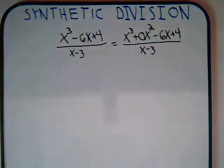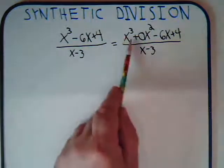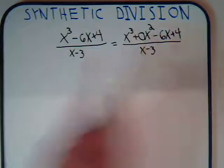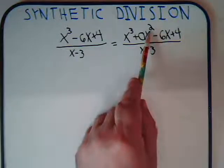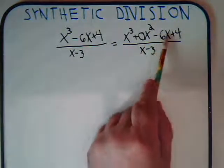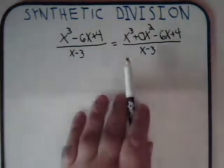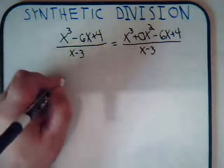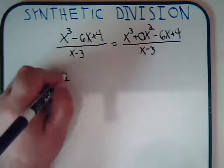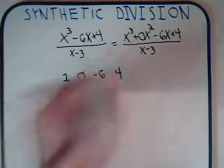We have our highest power of x, then x to the next highest power. There is no x squared, so we put down 0 for its coefficient. Then x to the first power, and x to the zero power. Now we're ready to apply the technique. We write down the coefficients: 1, 0, minus 6, and plus 4. We are dividing by x minus 3.